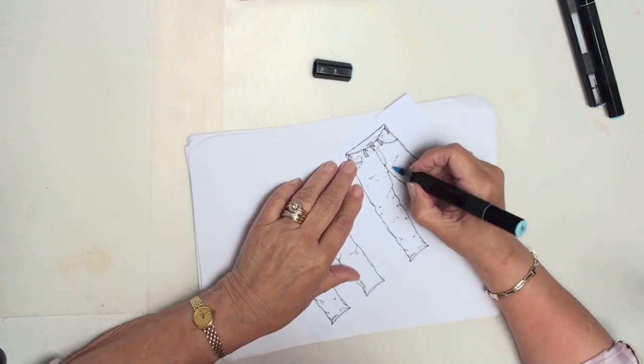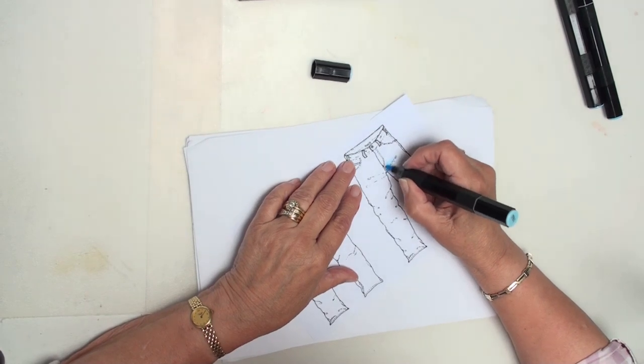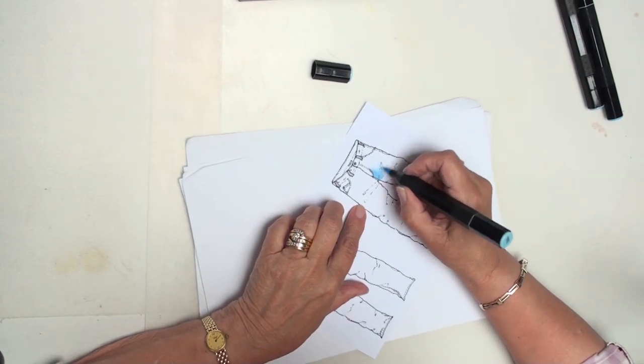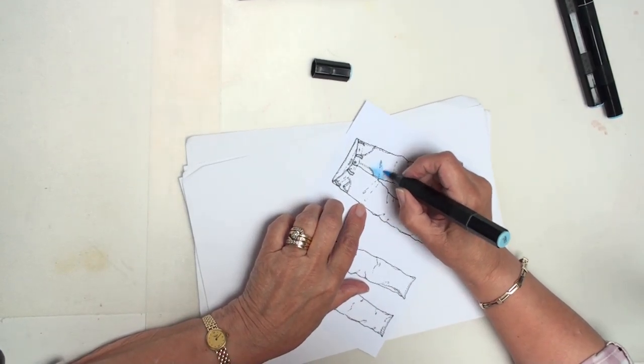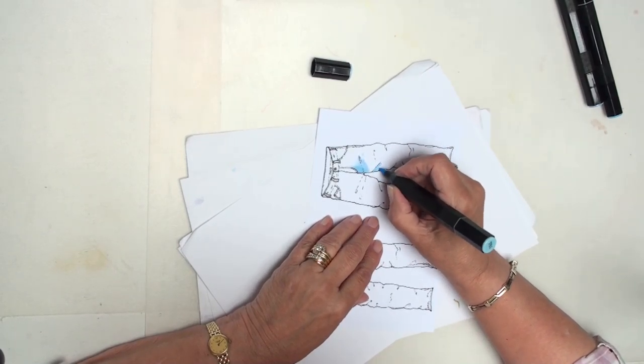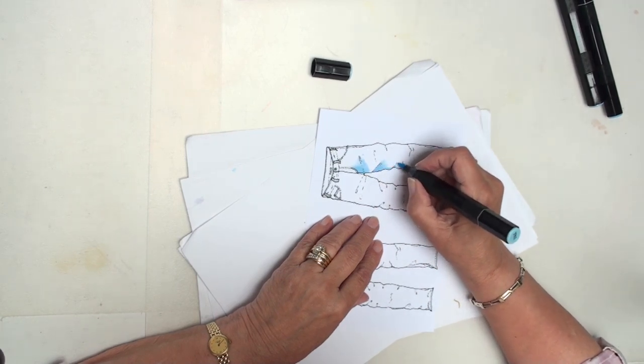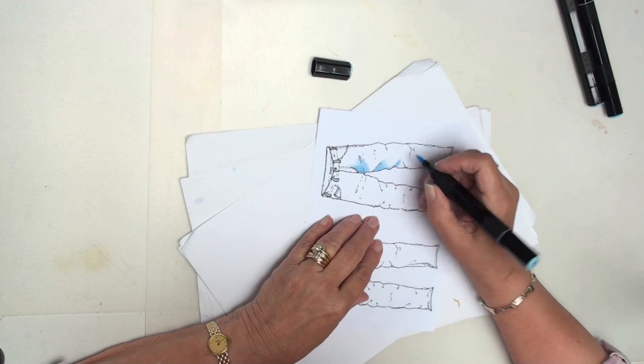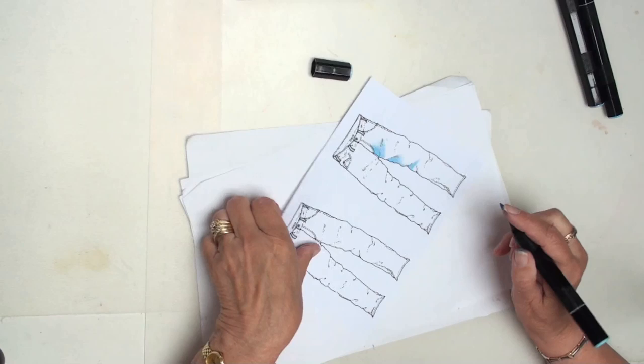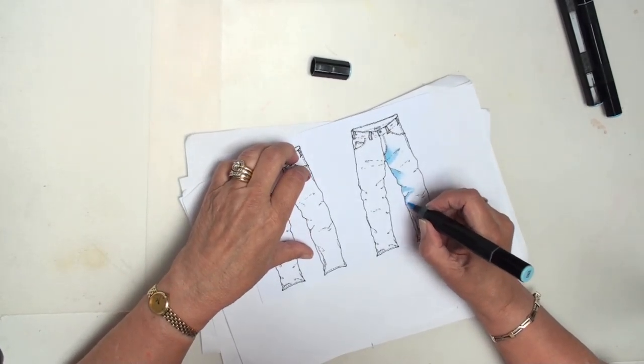So I'm going to start with this first crease here and I'm just going to flick out some color where the jeans would be gathered. And then coming down to the next crease I'm going to flick it out along there and the next crease. So I'm working underneath the crease line and I'm just flicking out some color. And this is just going to show me where I want to add my shading.